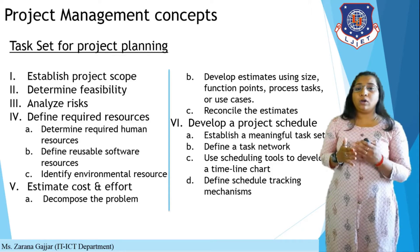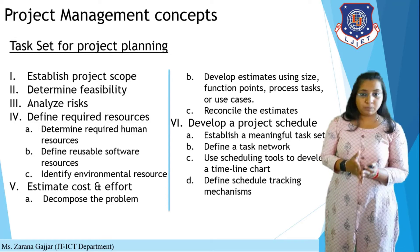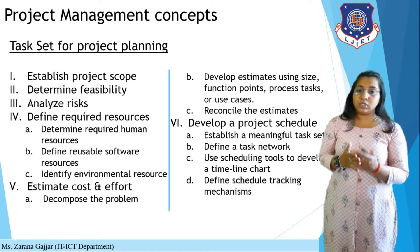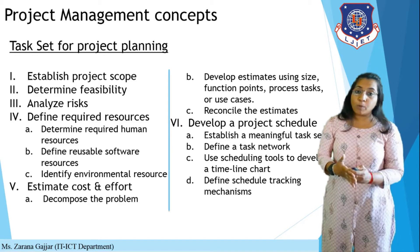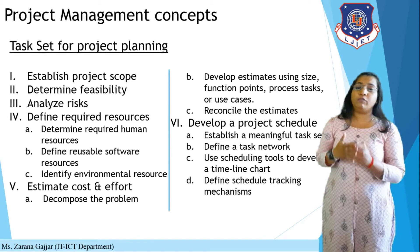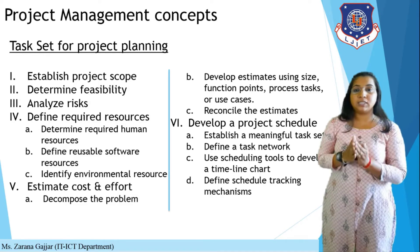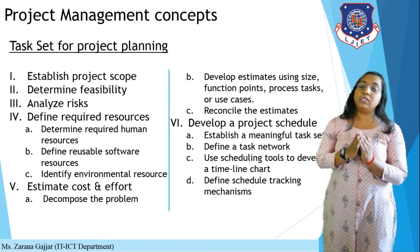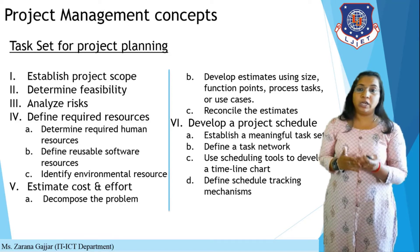In Unit 4, we already learned about the SRS — Software Requirement Specification — in which we define an introduction covering the objective and scope of the software. Similarly here, the first task set for project planning is to establish the project scope: what your project scope is must be clearly mentioned.